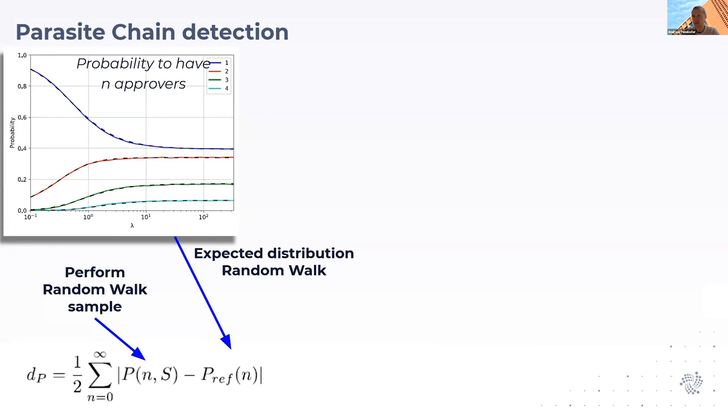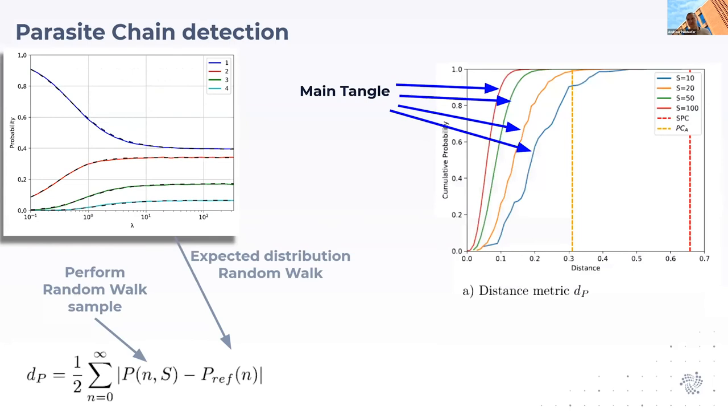From this, we derive a probability distribution or histogram of how many transactions you found. You compare this distribution that you found with the reference distribution given through this model. This gives you a distance, and this distance varies due to stochastic reasons.